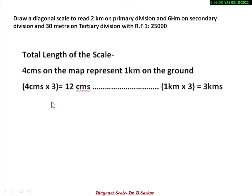We multiply 4 cm by 3, giving a total length of 12 cm, representing 3 km. The choice of 3 depends on you — you may choose any number, but the length should not exceed your paper. Our normal paper in landscape mode is about 30 cm, and the standard is 14 to 16 cm, that is why we choose 3. You may choose 4 or 5, but multiplying by 4 gives 16 cm total.